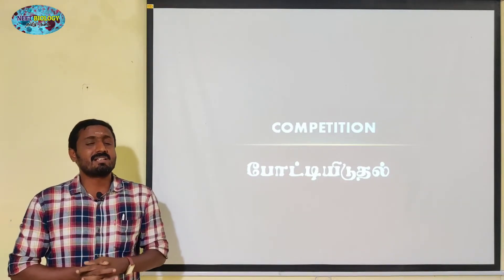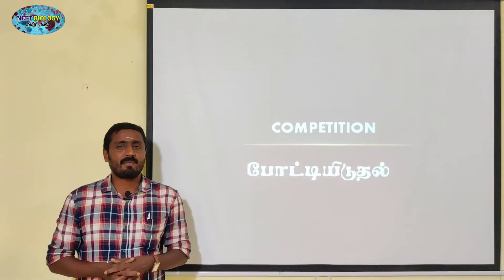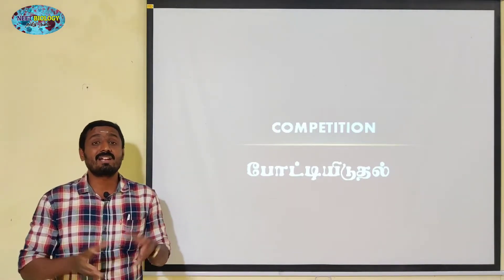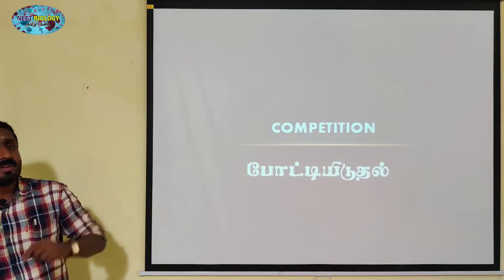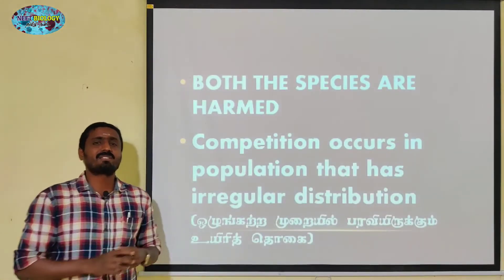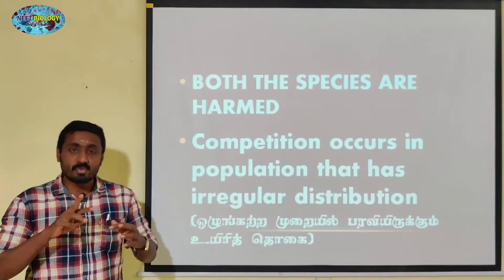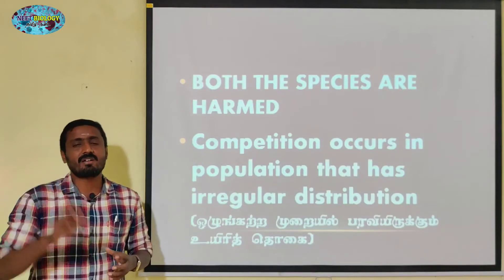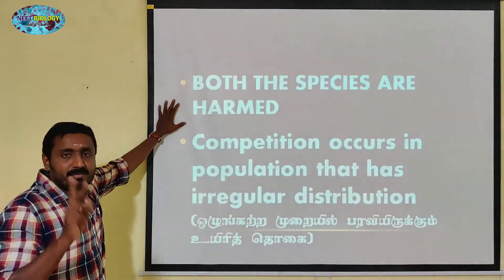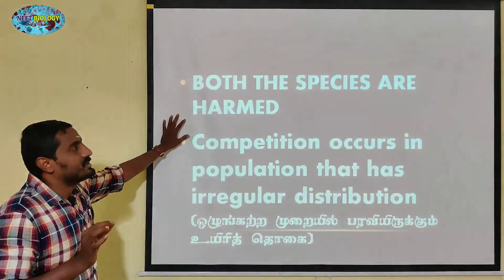First of all, what is negative interaction? Why do we call it that? When two organisms are involved and they are getting harmed, that is a biotic factor. In competition, both organisms are negative — two species or two individuals are participating, and both will be harmed. That is the definition: both species are harmed.